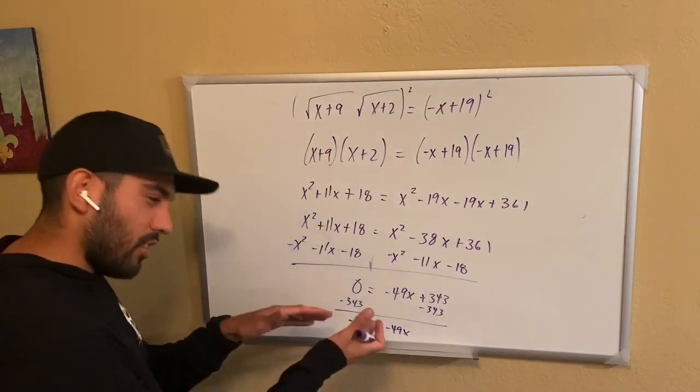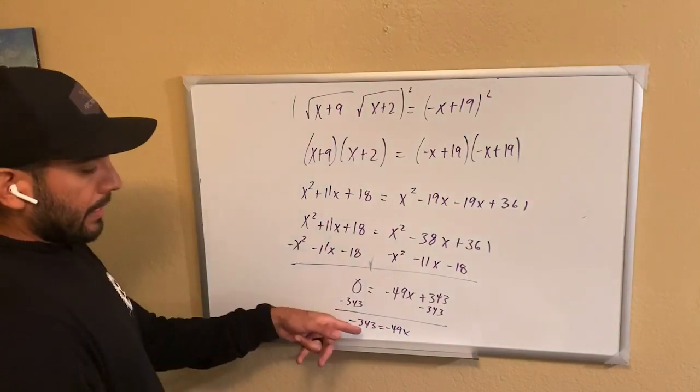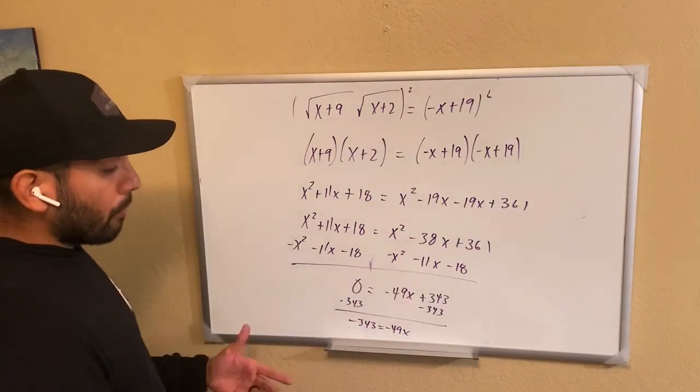Negative 49x. Ah, man, I wish I had just a little bit more space with that. I divide negative 49 to both sides.